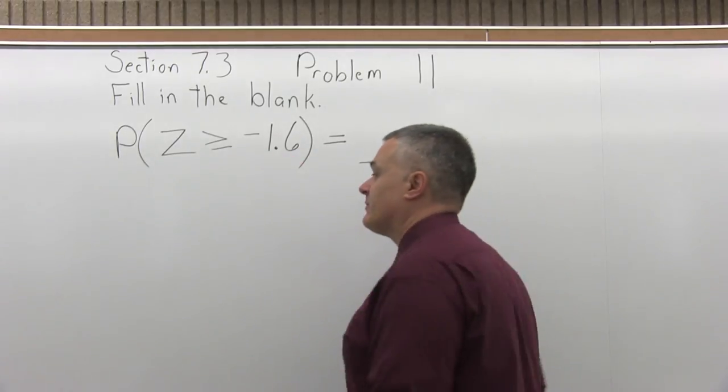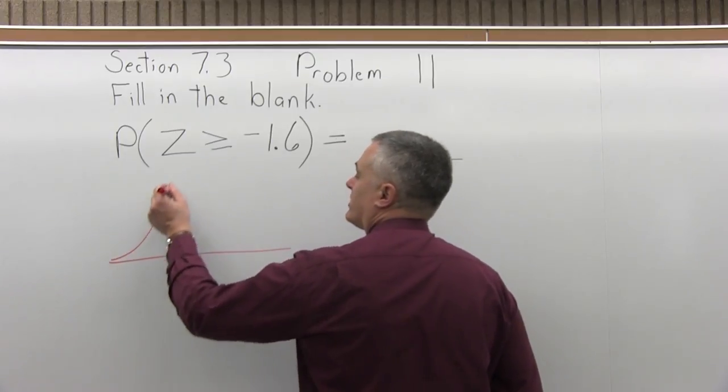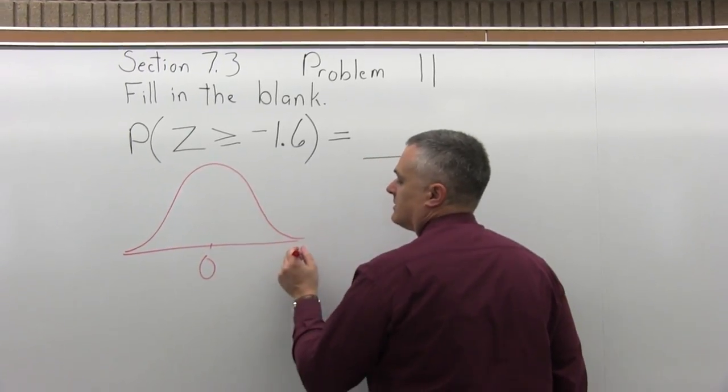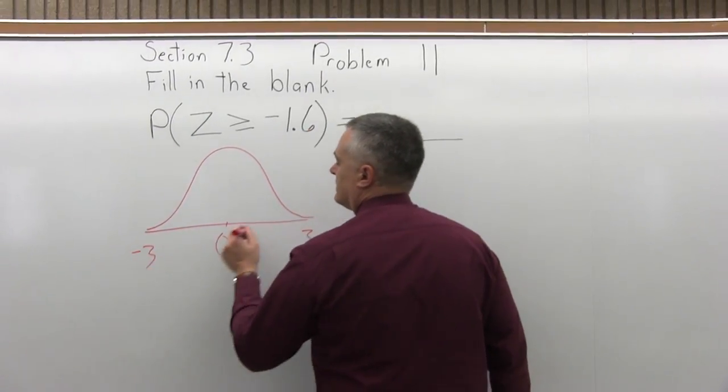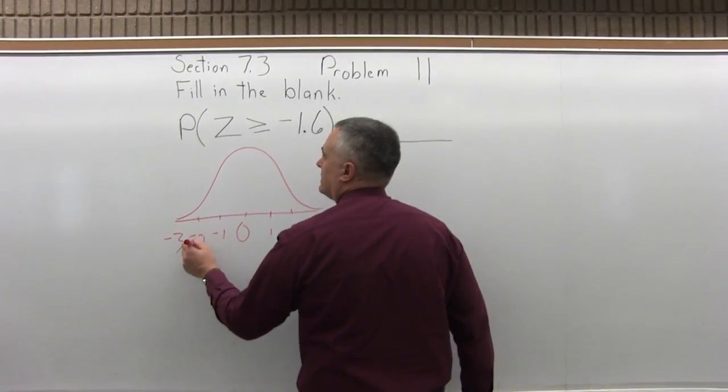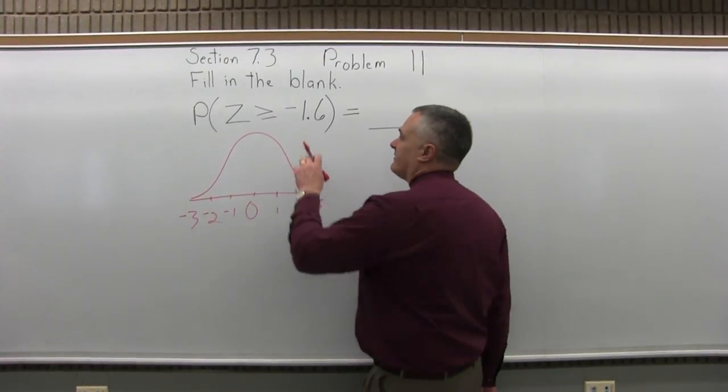So let's start off by seeing what this looks like. And you can answer this problem without drawing the graph, but I think it helps. So if I start with a regular bell curve, the numbers underneath are how many standard deviations away from the average value you have.